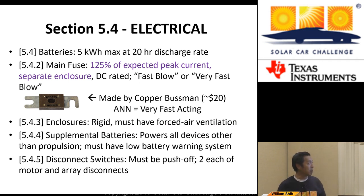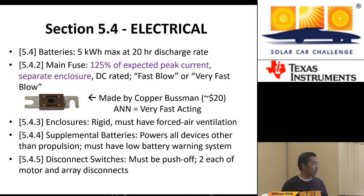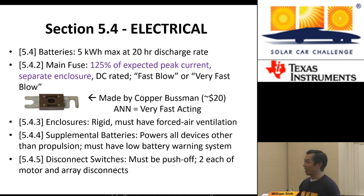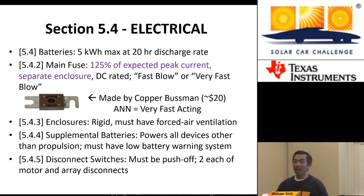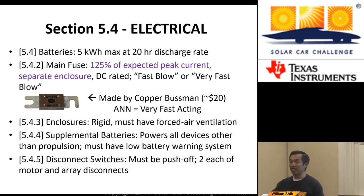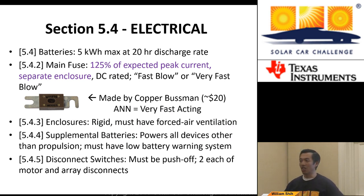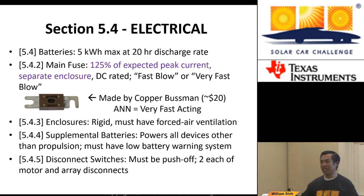The batteries must be in a rigid enclosure and must have forced air ventilation. That ventilation must exhaust behind the driver's compartment. If you have batteries in front of your driver, you need to route that ventilation all the way back behind the driver so that as the car is moving, you're not exhausting battery fumes into the driver compartment.